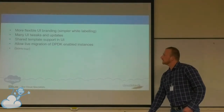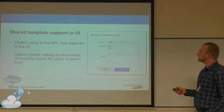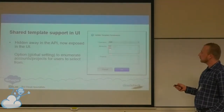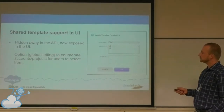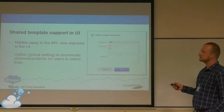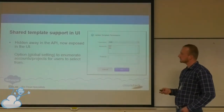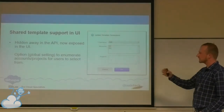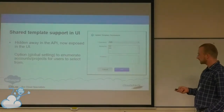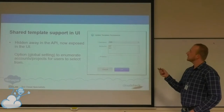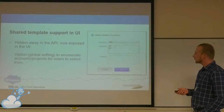Shared template support has been available via API for a while, but now it's in the UI. If you are the account owner of a template, you can share it with different accounts or projects. There is a global setting controlling whether the list of other accounts within your domain is visible — for public clouds you definitely don't want to expose a list of all accounts if each one is a different tenant. You can add, remove, or reset permissions so it's not shared with anybody.